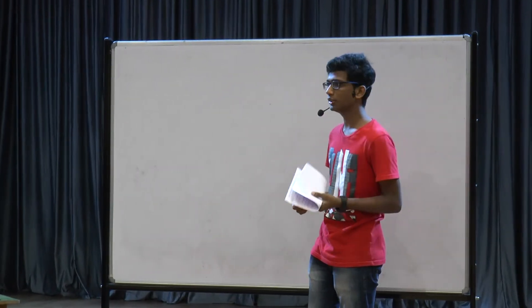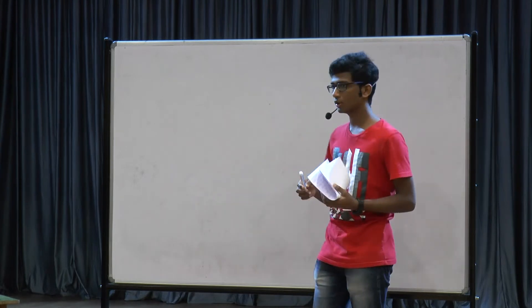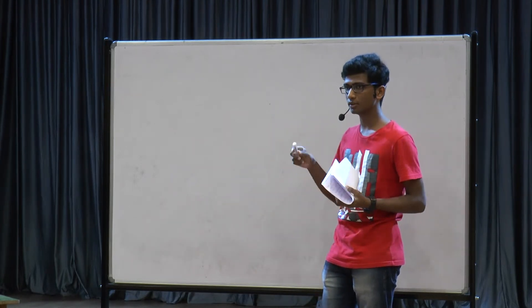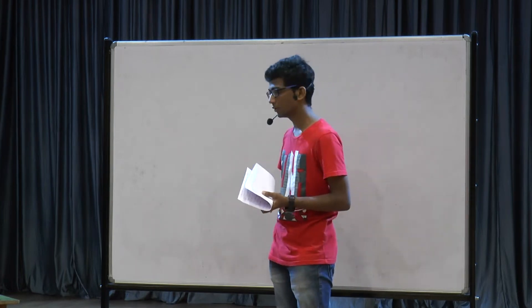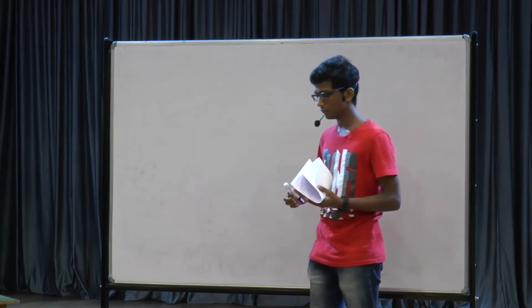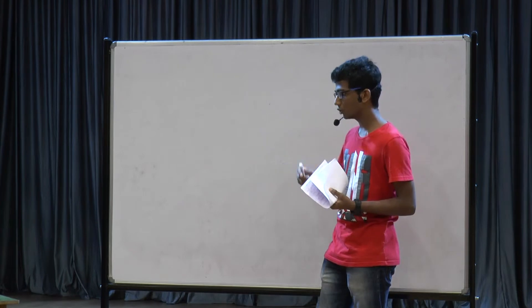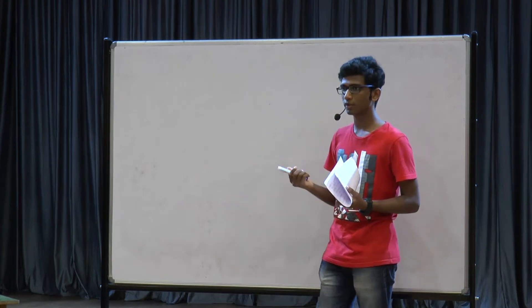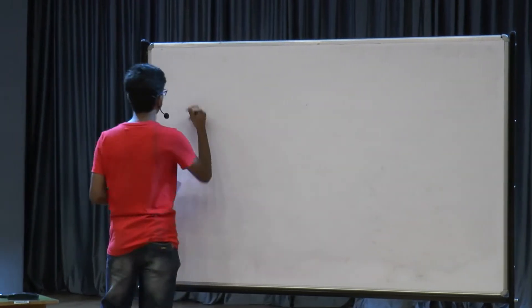In ancient times, people used to record the positions of planets in the sky, and using these records, they came up with some laws about the orbit of the planets. These laws are called Kepler's laws.